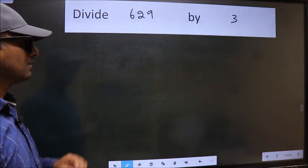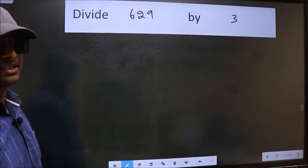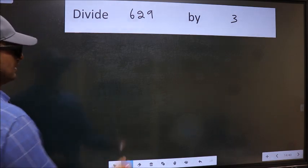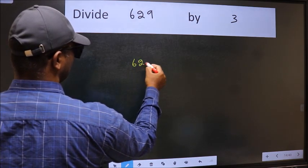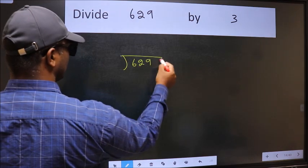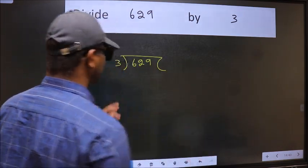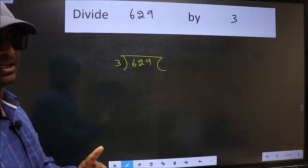Divide 629 by 3. To do this division, we should frame it in this way. 629 and 3 here. This is your step 1.